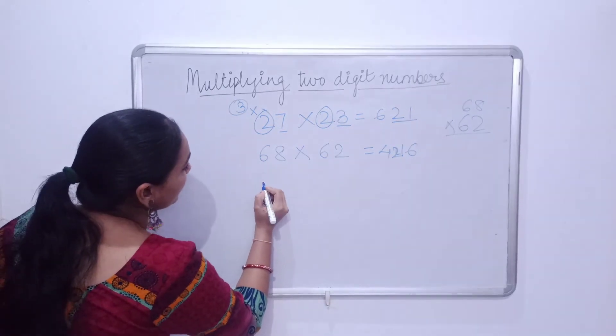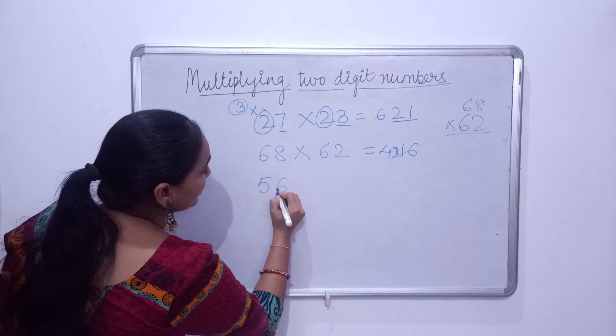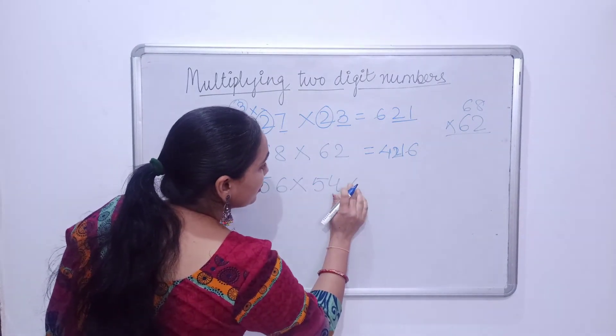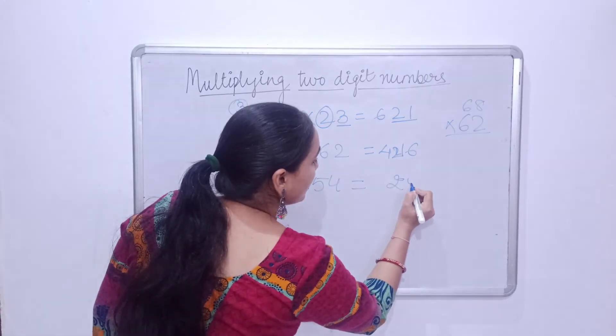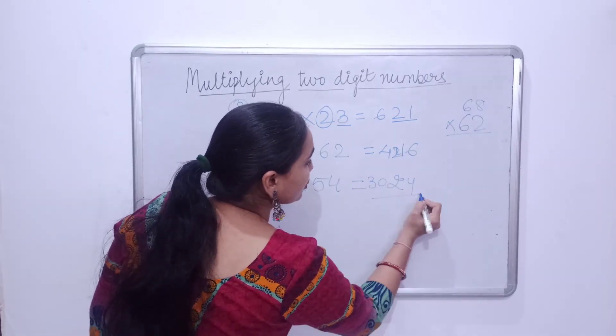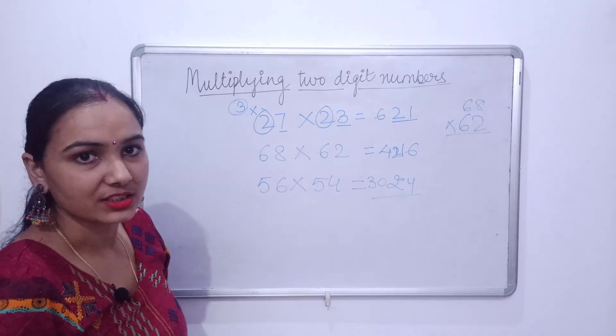Like, if we have taken here 56 into 54. So 6 times 4 is 24, and 5 times 6 is 30. So 3024 is your answer.